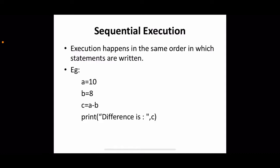For sequential execution, consider a program to find the difference of two numbers. The first statement assigns value 10 to variable a, the second assigns a value to variable b, the third computes a minus b and assigns the result to variable c, and finally we print c. These statements execute in exactly the same order as they were written — that is sequential execution.